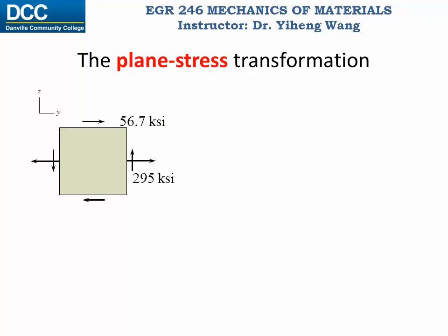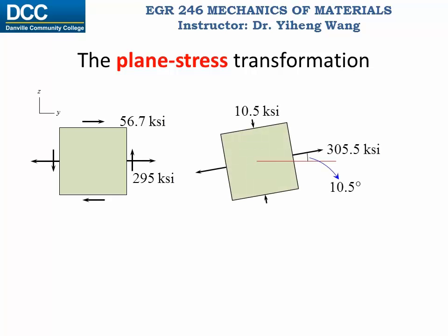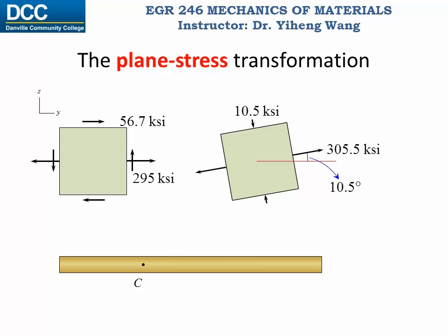We will also determine at what orientation the maximum normal stress or the maximum in-plane shear stress occurs. For this particular element, we will determine that it is at a certain orientation where it has the maximum normal stress of 305.5 ksi with no in-plane shear stress. If point C happens to be the weakest point of this member and the material is brittle, which has a lower resistance to normal stress, it is likely to fail along this plane in accordance with this orientation.